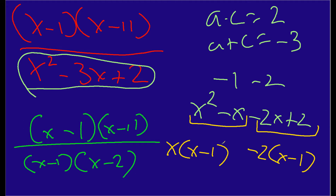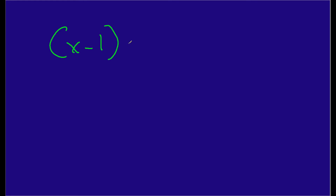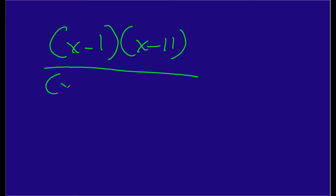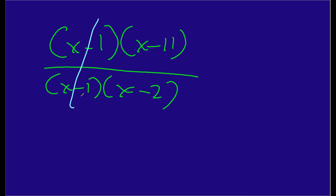You can probably see what we're going to eliminate. We have x minus 1 on the top and x minus 1 on the bottom, so we can eliminate that. That leads us to the final answer: x minus 11 over x minus 2. And we're essentially done.